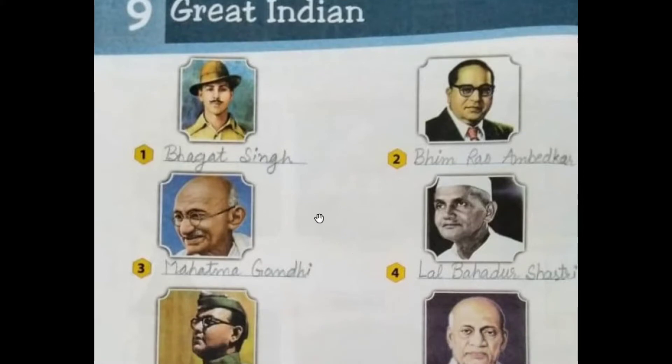The first one is Bhagat Singh. He was born on 28th September 1907. He was an Indian revolutionary — means Krantikari.